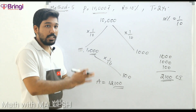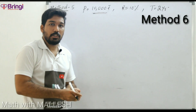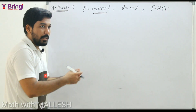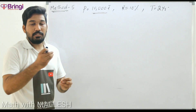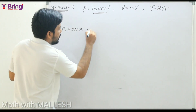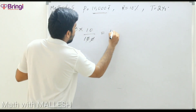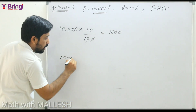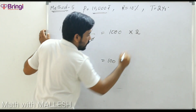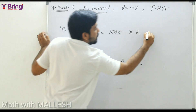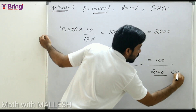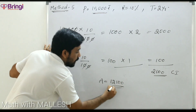Method 6: This method is useful for finding the difference between simple interest and compound interest. The pattern is: 2, 1 for 2 years; 3, 3, 1 for 3 years; 4, 6, 4, 1 for 4 years. With principal 10,000 and 10%, calculate 10% = 1,000. Multiply by the pattern: 2 × 1,000 = 2,000 and 1 × 100 = 100. Together, compound interest is 2,100 and amount is 12,100.